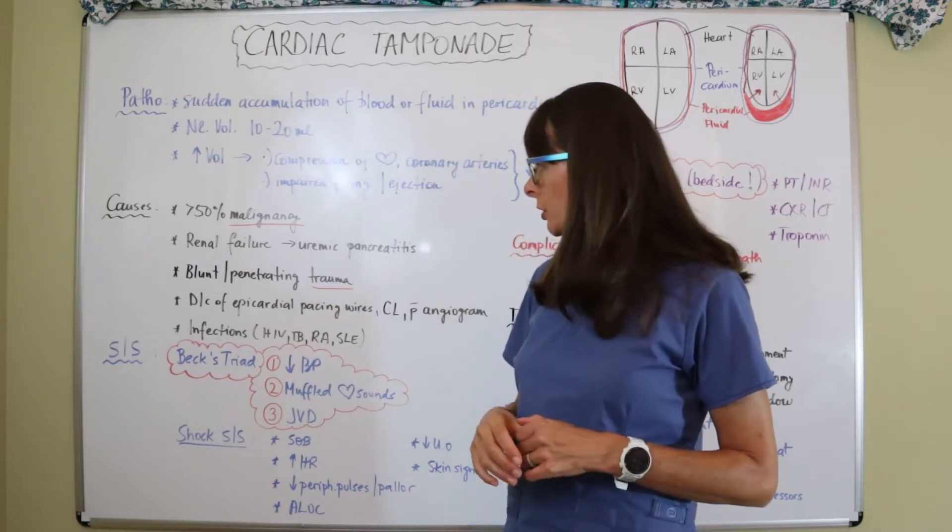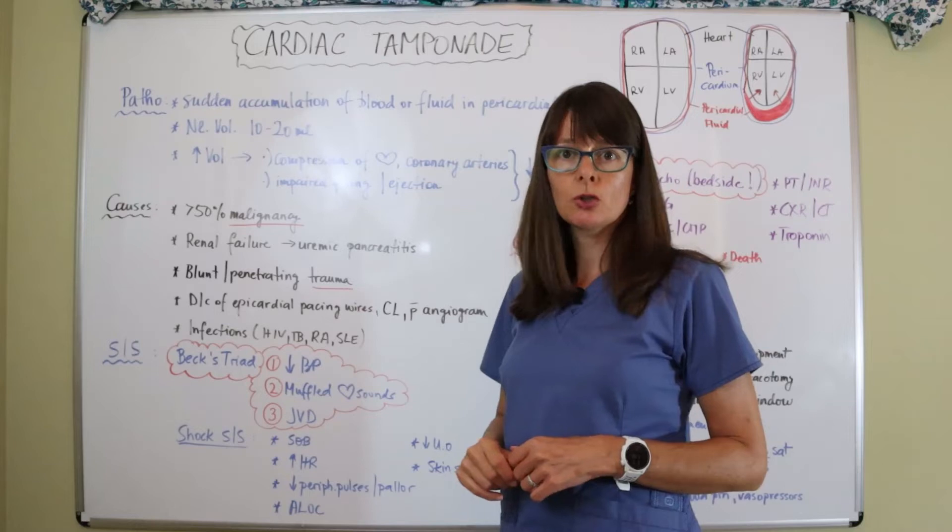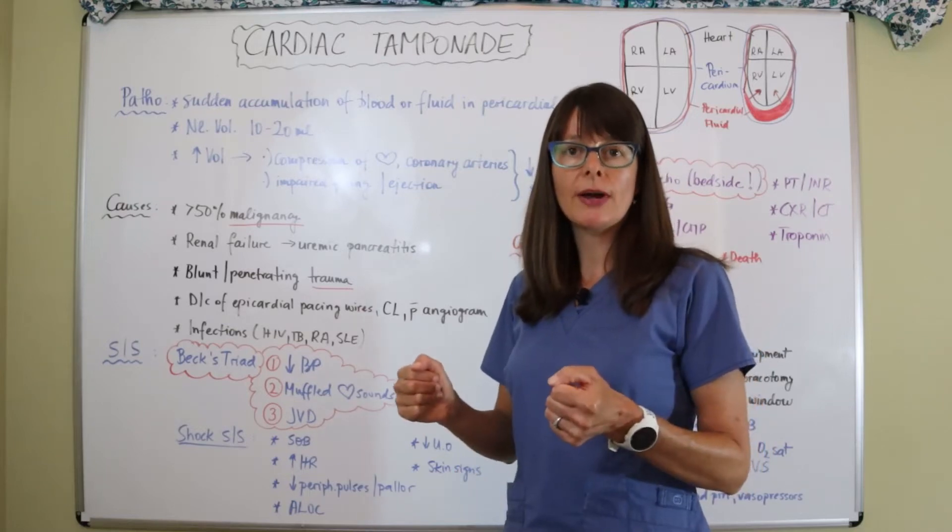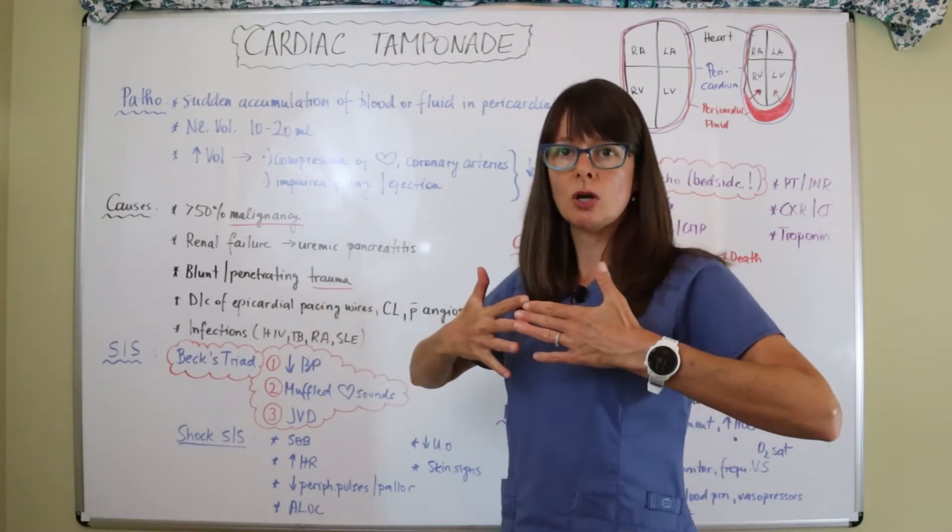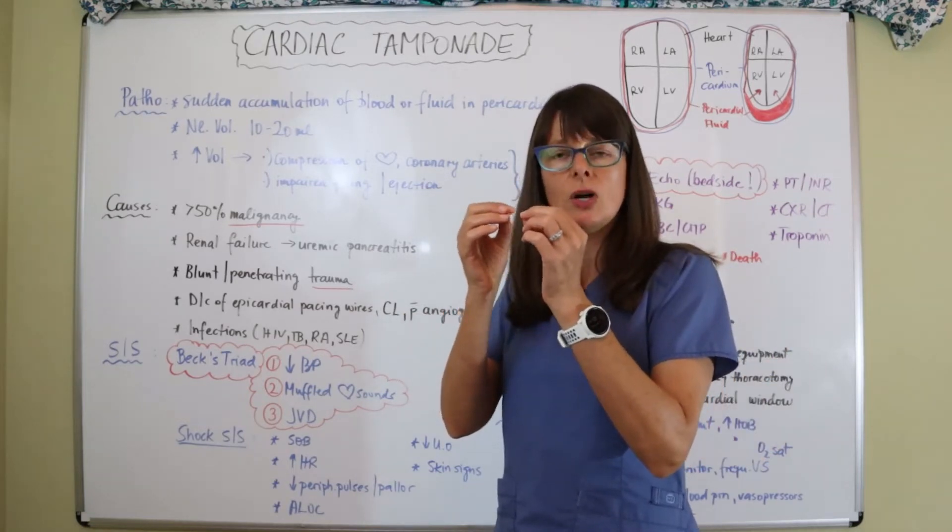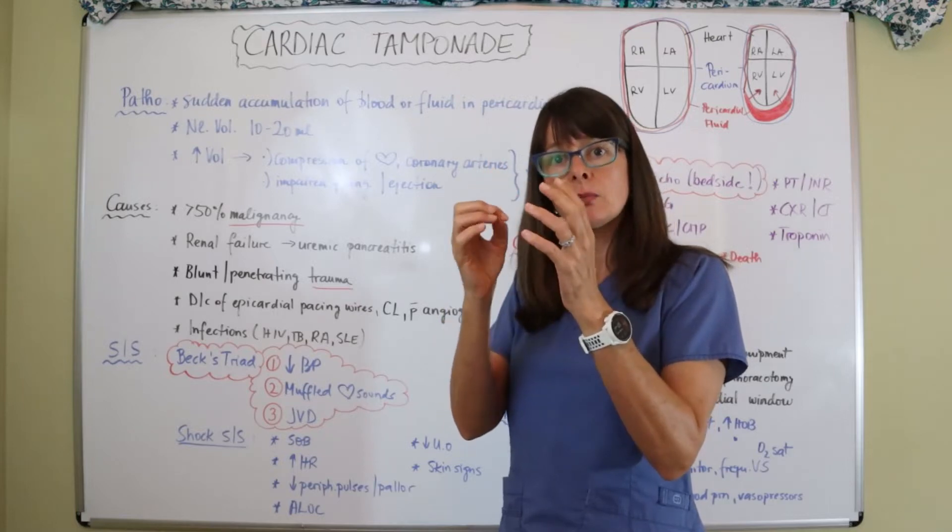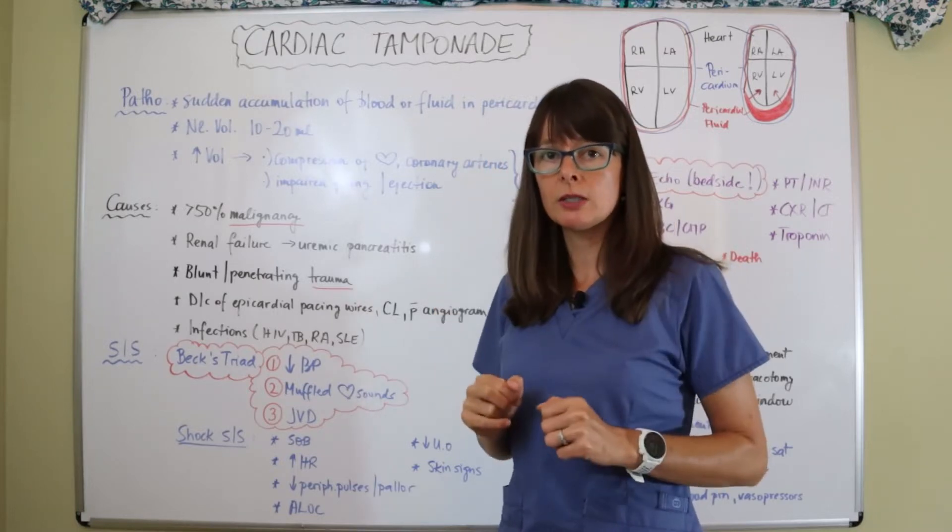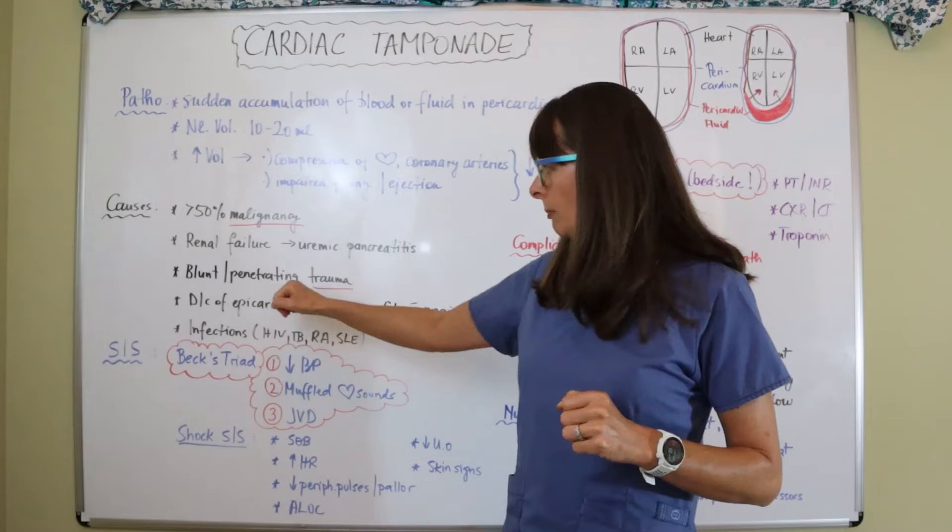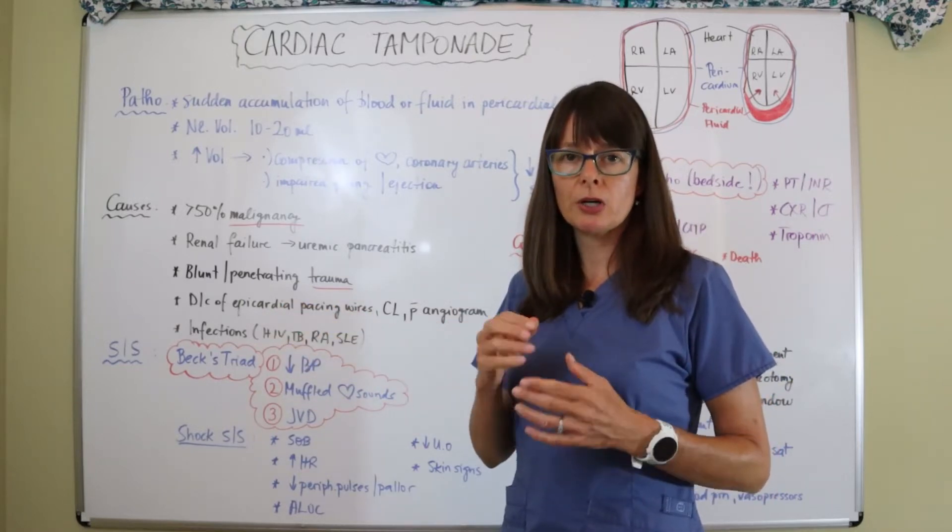It can also be by blunt or penetrating trauma. If you think about it, in a car accident if the airbag goes off, for example, there's some blunt trauma to the chest and just a minor vessel ruptures in the sac and then it bleeds into it, it can lead to the tamponade. Or of course penetrating injury to the pericardial sac causes bleeding into that cavity.